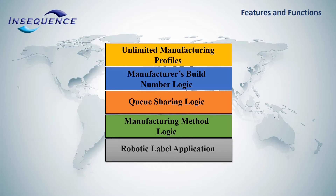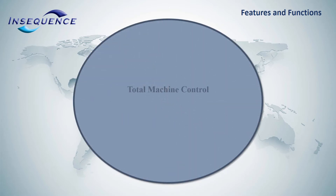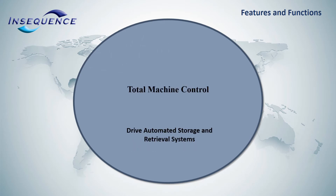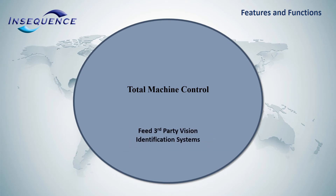Robotic label application automatically applies labels with no operator interaction required. SPD Pro allows total machine control. This includes controlling conveyor equipment, driving automated storage and retrieval systems, controlling dock stripping equipment, controlling overhead gantry cranes for automated retrieval, and feeding third-party vision identification systems.